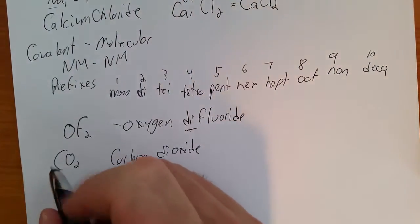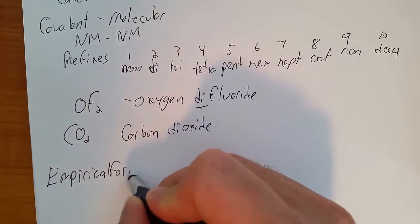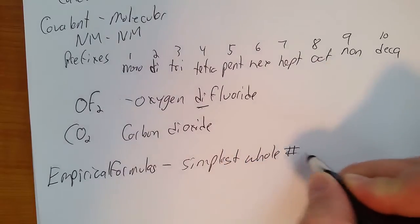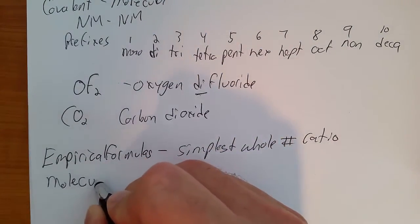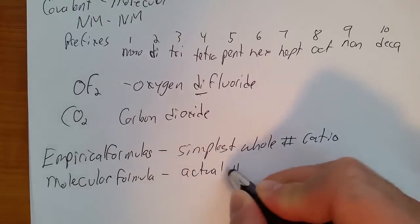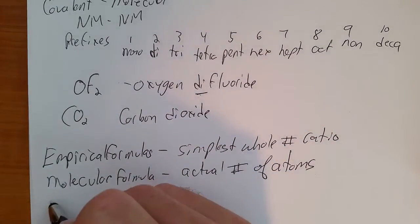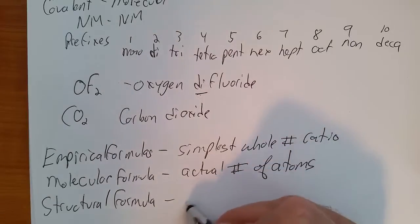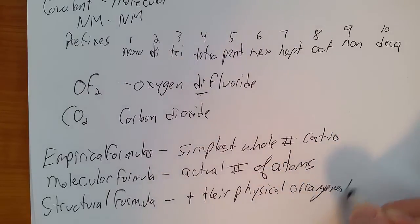So different types of formulas. We have empirical formulas. They show the elements in the simplest whole number ratio. It may or may not be the same as the molecular formula. Molecular formula shows the actual number of atoms present in the molecule. And then you have a structural formula which shows the actual number of atoms and their physical arrangement.